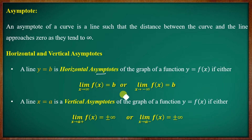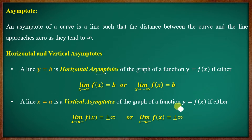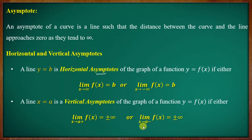For the vertical asymptote: a line x equal to a is a vertical asymptote of a graph of a function y equal to f of x if either the limit as x tends to a from the right of f of x equals plus or minus infinity, or the limit as x tends to a from the left of f of x equals plus or minus infinity.